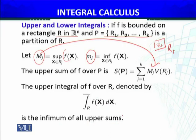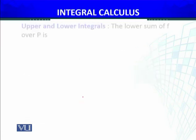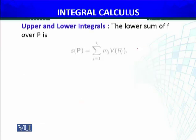As the partition P changes, there are infinitely many — even uncountably many — possible partitions. For each partition we obtain an upper sum, giving us a set of upper sums: S(P1), S(P2), and so on. Similarly, corresponding to each partition we obtain a lower sum, giving us the set of all lower sums.